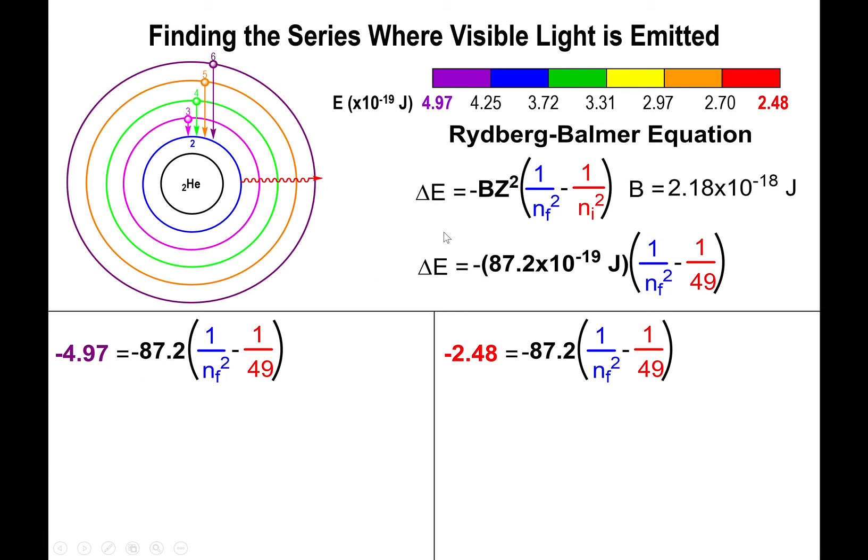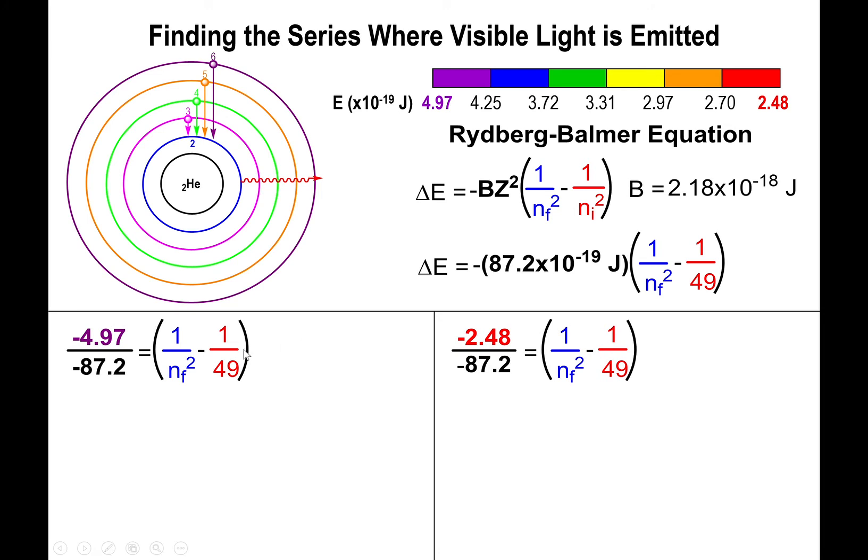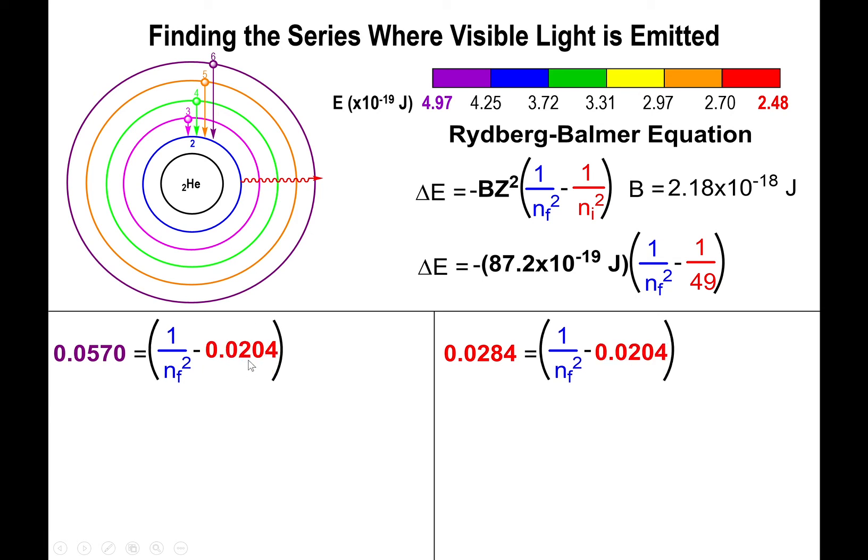So we're going to input the negative of the upper energy and the negative of the lower energy in the visible spectrum, and we're going to equal this to -BZ². Now what I'm going to do is try to find out if my assumption that n_initial equals 7 is good enough to end up with visible light. So what I do is divide both sides by -87.2. This is going to yield a positive number that will be less than one on both sets of the equations. Here what I would do now is divide 1 by 49 and get the value, which is roughly 0.0204, and that's being subtracted from 1/n_final².